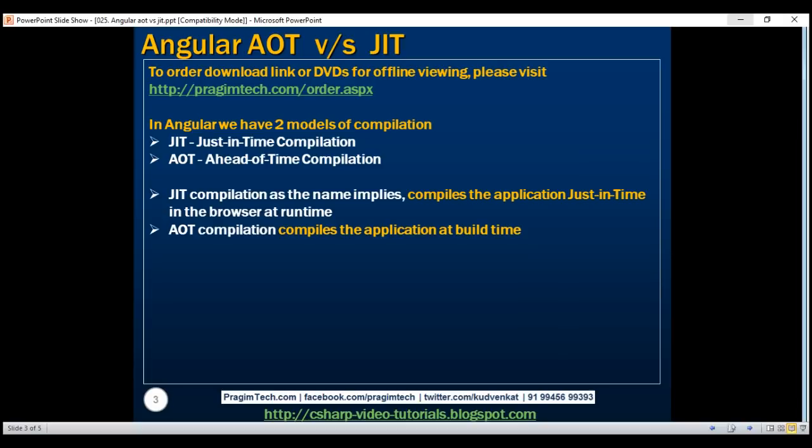With a development build, by default, we get JIT compilation, and this is how it works. The application code, along with the Angular compiler, is downloaded by the browser. At runtime, when a request is issued to the application, the JIT compiler in the browser compiles the application code before it is executed.